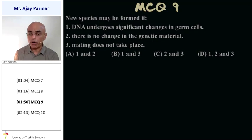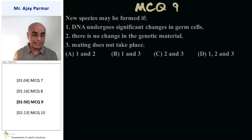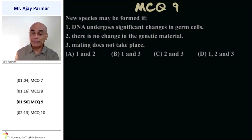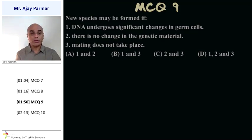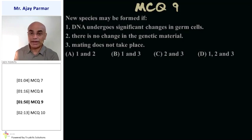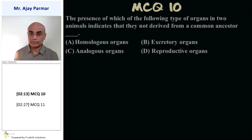New species are formed if DNA undergoes significant change — yes, that is correct. No change in genetic material? Obviously no. And mating cannot take place between these two different types of new species — that is also correct. That means statements 1 and 3 are both correct. So option B is the correct answer.